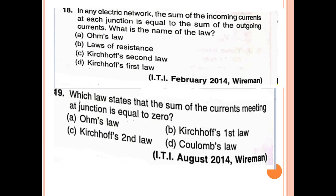18th question: In any electrical network, the sum of the incoming current at any junction is equal to the sum of the outgoing current. Which law states that the sum of the currents meeting at a junction is equal to zero? That is Kirchhoff's Current Law.